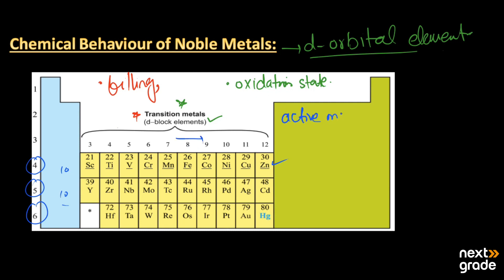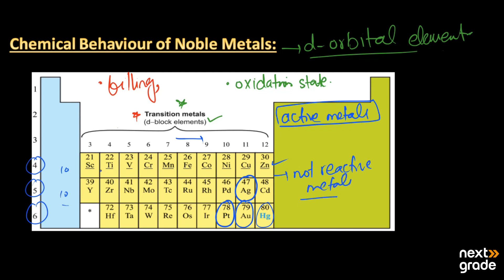The first series of transition elements are generally active metals that react with other elements. In the second series we have silver, and in the third series we have gold and platinum, along with mercury — these are not reactive metals. Copper also falls into this category in the first series. These metals — platinum, gold, silver, mercury, and copper — do not exhibit the same variety of oxidation states as other transition metals and are therefore called noble metals.